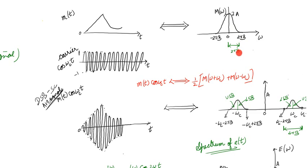The carrier signal is cos(ωc·t), which oscillates between amplitude +1 and −1 continuously. When we multiply m(t) with cos(ωc·t) to get the DSB-SC amplitude modulated signal, we get this resulting signal.